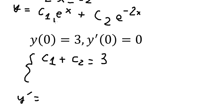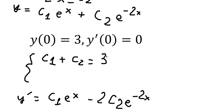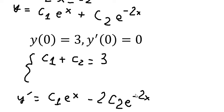The first derivative: e^x stays the same, giving c₁ e^x, and the derivative of the second term gives negative 2 c₂ e^(−2x). Substituting x = 0, both exponentials become 1, so we get c₁ minus 2c₂, and this equals zero.